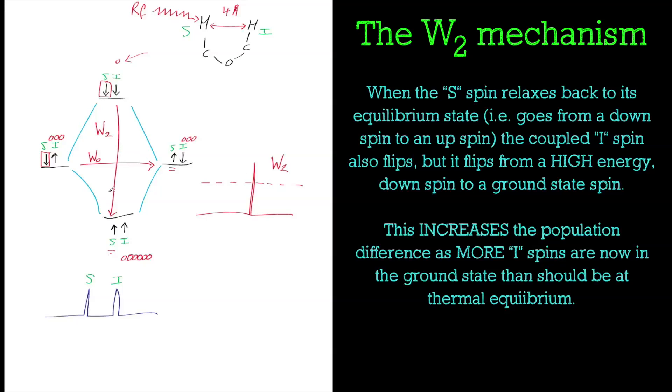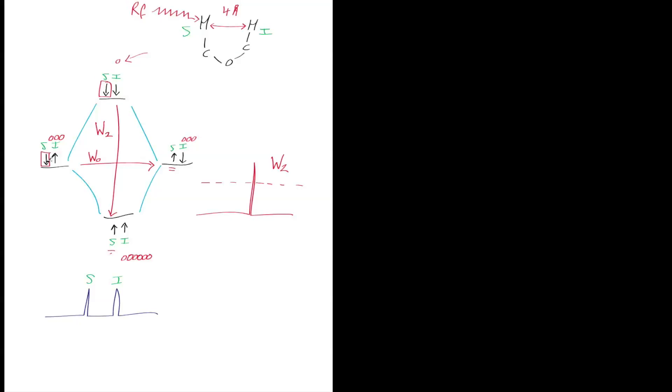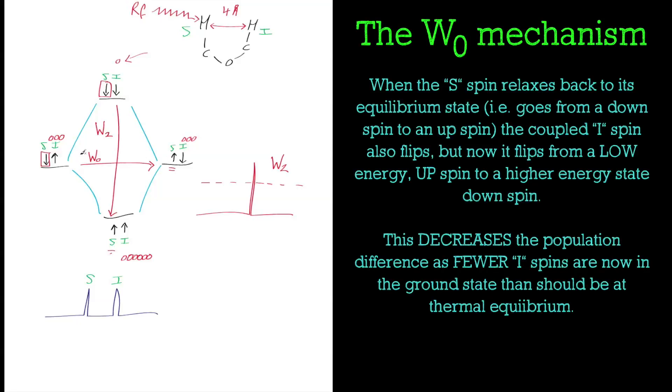The fact that the source spin in this mechanism has gone from the upper state where the interesting spin was down to the ground state where the interesting spin is up, it's added an up spin. It's got rid of a down spin for the interesting spin and added an up spin, so it's added one more to the population difference. The signal intensity for that spin looks bigger because it's added population inversion. That's for the W2 or double quantum transition.